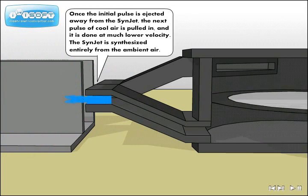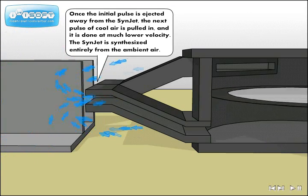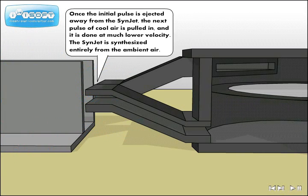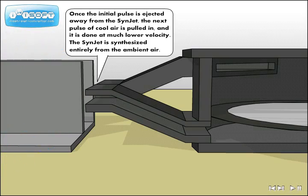Once the initial pulse is ejected away from the SynJet, the next pulse of cool air is pulled in and it is done at a much lower velocity. The SynJet is synthesized entirely from the ambient air.